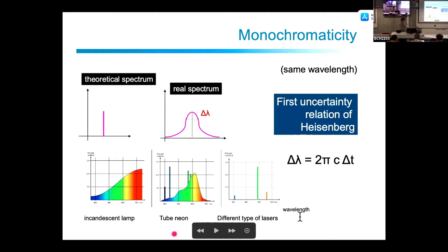Lasers come in different colors. The usual ones are red, and we can go up to blue with short laser pulses — but not really further. So not all colors for the laser are accessible in experiment.